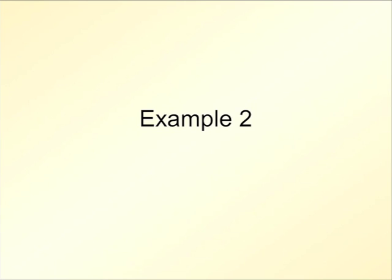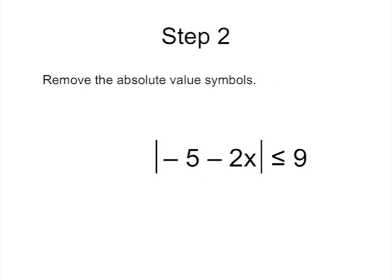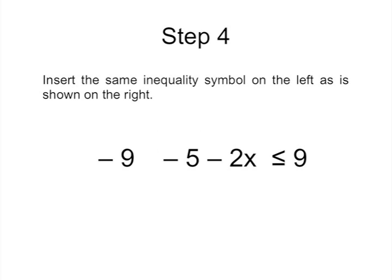Now let's try another example. The first step is to write out the entire inequality and determine if a solution is possible. In this case, it is possible because a positive number can definitely be less than or equal to the value of 9. Next, and the real secret to solving these types of problems, is to rewrite the inequality over again but without the absolute value symbols. Then, on the opposite side of the inequality, write in the opposite numeric value. The next step is to insert the same inequality symbol on the left as shown on the right.